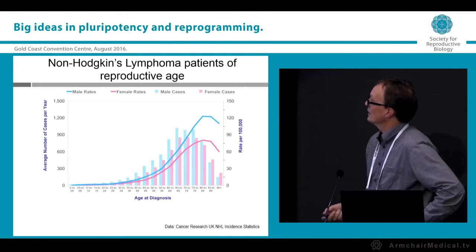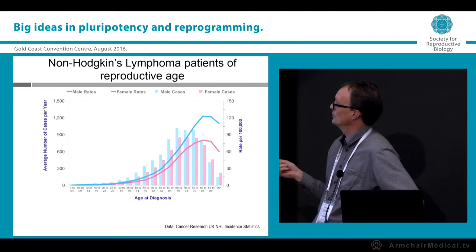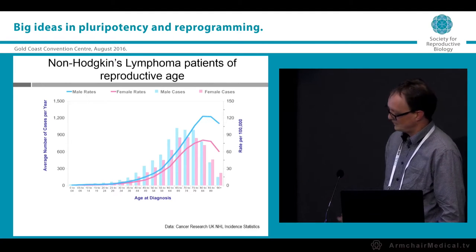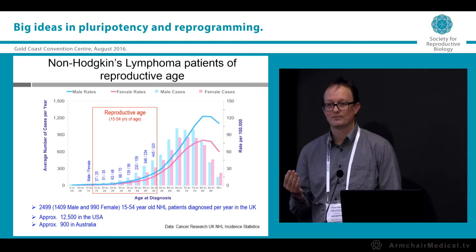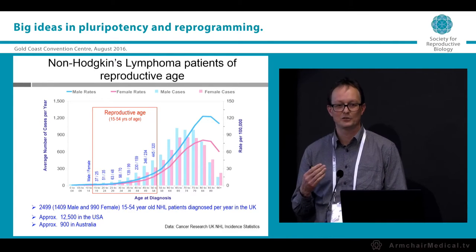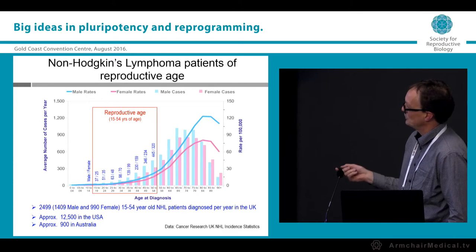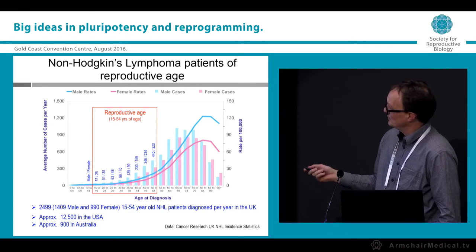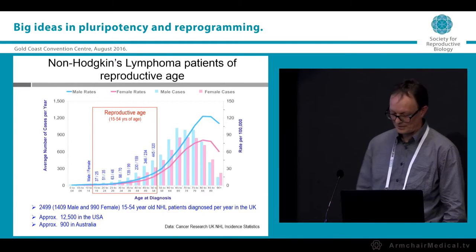One cancer type with excessive EZH2 is non-Hodgkin lymphoma — a common tumour typically affecting people in later stages of life, but also a certain number of people of reproductive age. Some of these patients are now in clinical trials using anti-EZH2 drugs. This affects around 12,000 new cases a year in the United States, about 1,000 in Australia, and 2,500 in the UK.